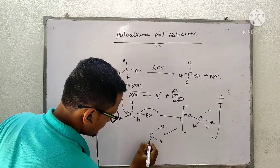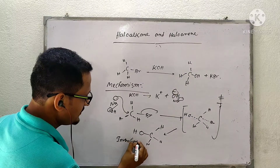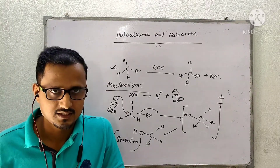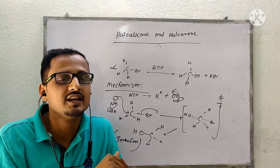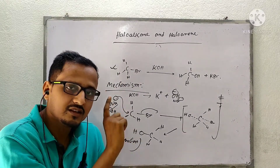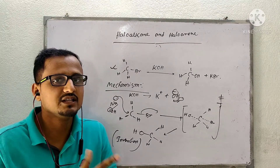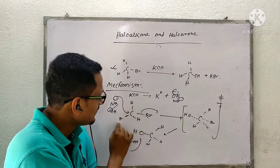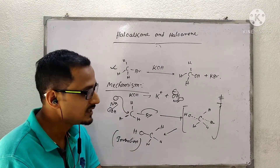For SN1 we saw both retention and inversion — racemization — because of carbocation formation. But for SN2 there is complete inversion. If you take a chiral compound that is levorotatory as reactant, the product will be dextrorotatory. If you take a dextrorotatory compound, the product will be levorotatory. If the reactant is R-configuration, the product will be S-configuration.